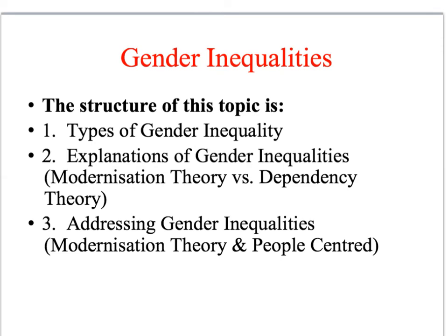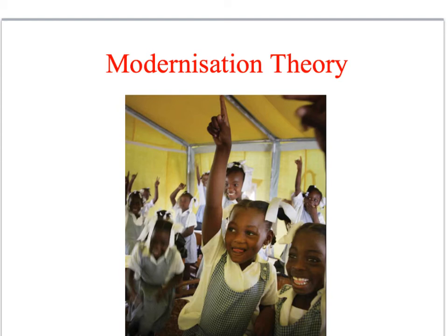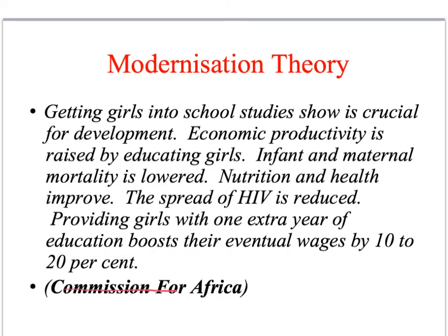Let's round off this presentation by briefly looking at some of the policies that have been used to address gender inequalities. Modernisation theory would really emphasise the importance of education as a development policy in this area. The Commission for Africa suggests that education for girls is one of the most effective development policies, with evidence that it can enhance economic productivity, lower infant and maternal mortality, improve nutrition and health, and reduce the spread of HIV. This is a development policy that potentially has a really big impact.